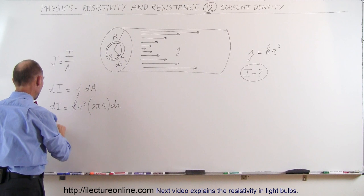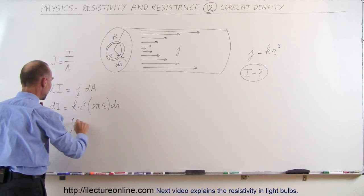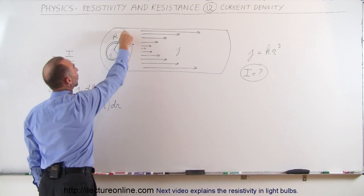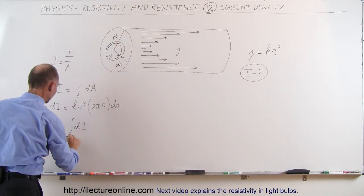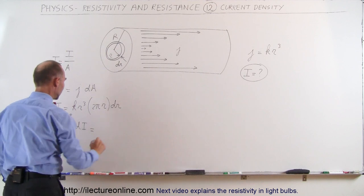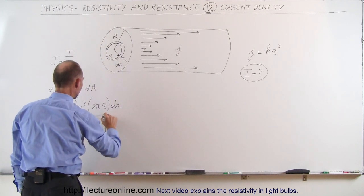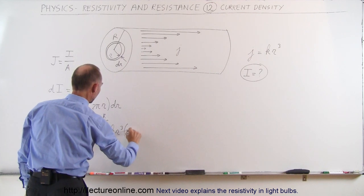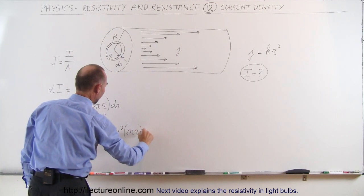So now to find the total current I, we're going to integrate all the DI's and the DI's will be integrated from R equals zero to R equal the radius of the cylinder. So from zero to big R, which is equal to the integral from zero to big R of K R cubed times two pi R times DR.